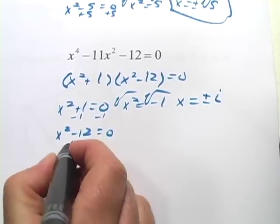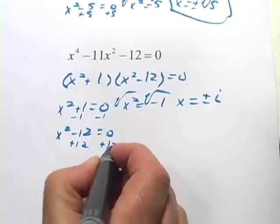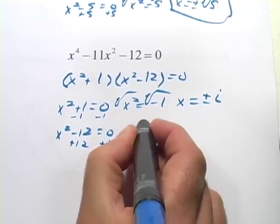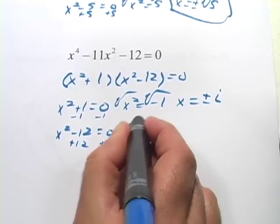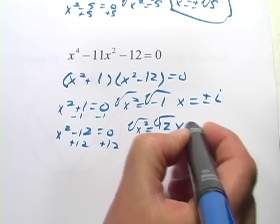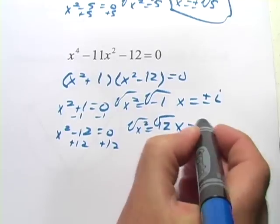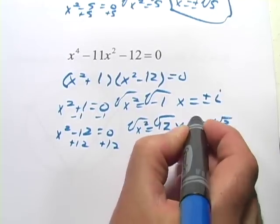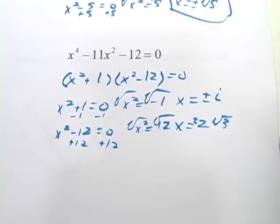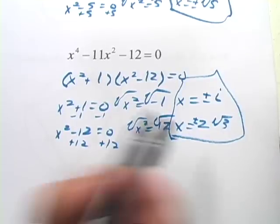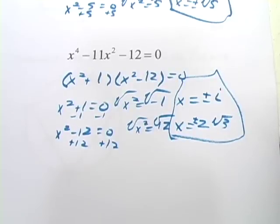And over here, we add 12 to both sides, and we get x squared equals 12. Take the square root, and we get x equals, let's see, that square root of 12, that's 2 times the square root of 3. Oops, but we need positive or negative. So these are the four answers for that one.